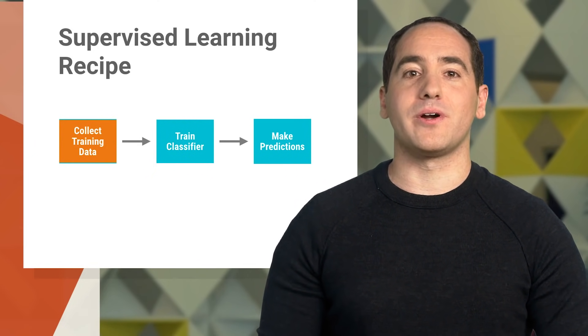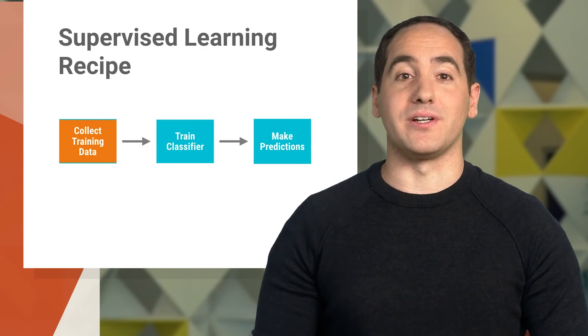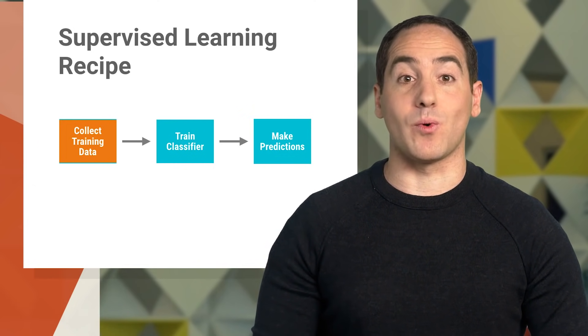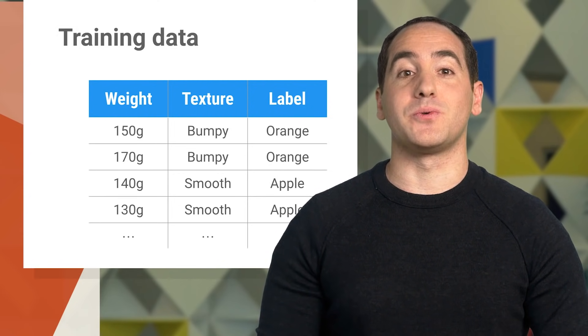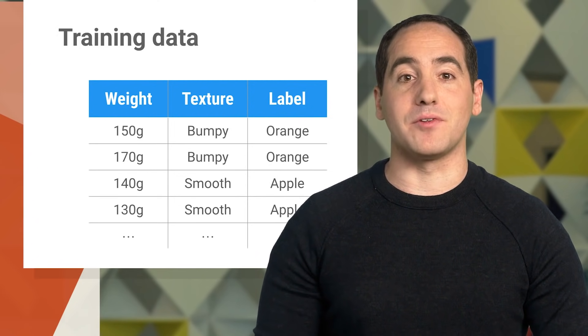For our problem, we're going to write a function to classify a piece of fruit. For starters, it will take a description of the fruit as input and predict whether it's an apple or orange as output, based on features like its weight and texture. To collect our training data, imagine we head out to an orchard. We'll look at different apples and oranges and write down measurements that describe them in a table.